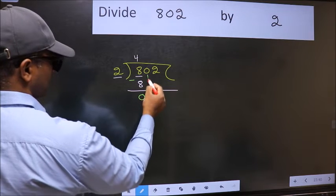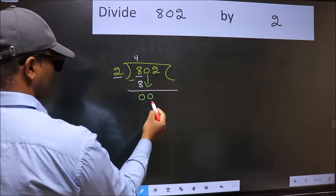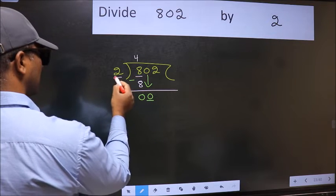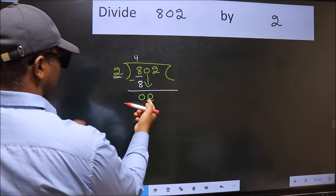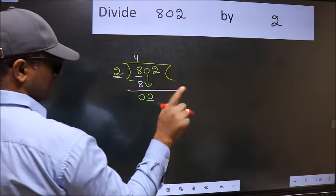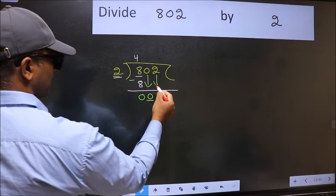After this, bring down the beside number. So 0 down. Now here we have 0 and here 2. 0 is smaller than 2, so we should bring down the second number.